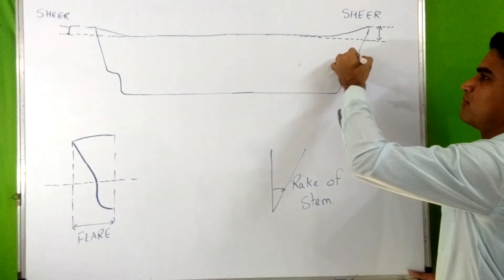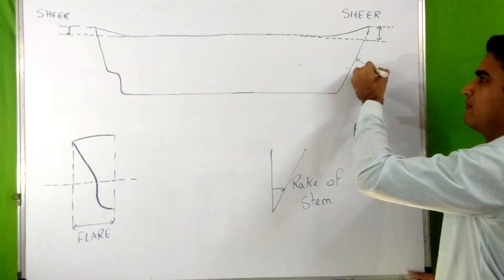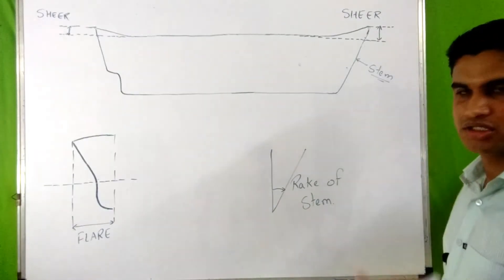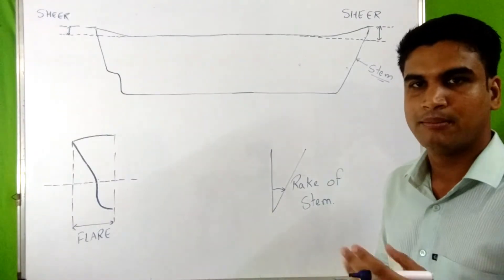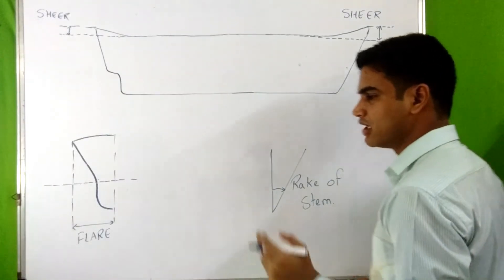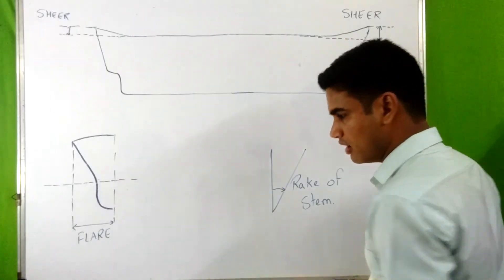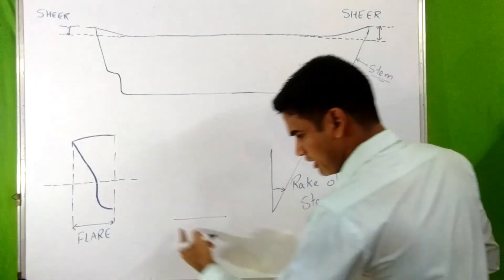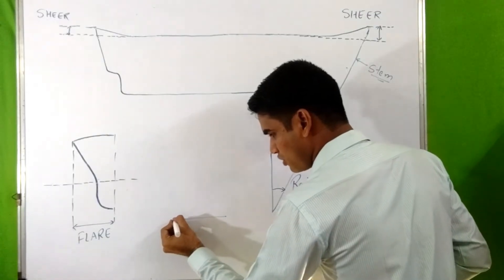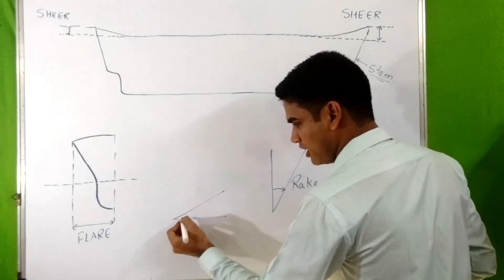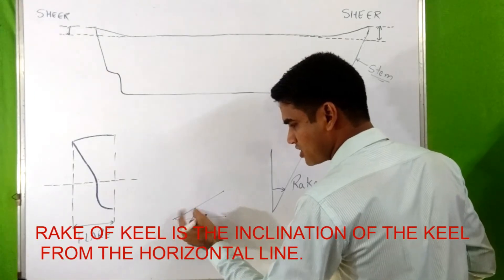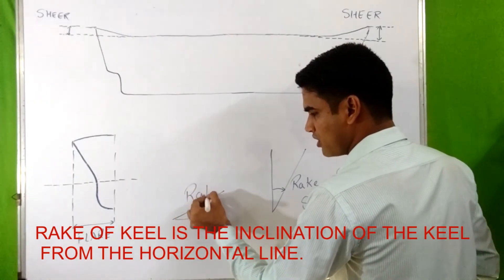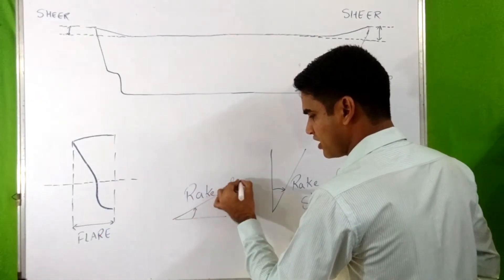We have discussed that this part of the ship is known as the stem in the video on ship dimensions. Next is rake of keel. Rake of keel means the inclination of the keel from the horizontal line — this inclination of the keel from the horizontal line is known as rake of keel.